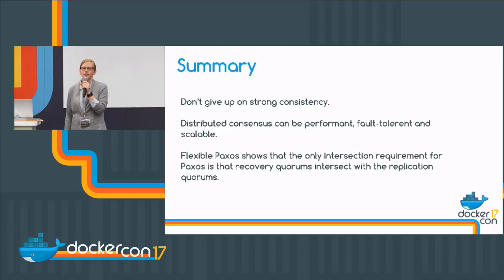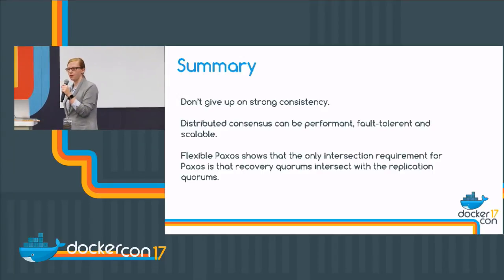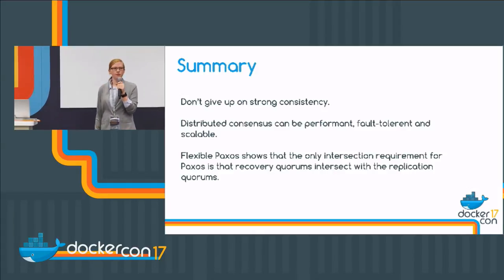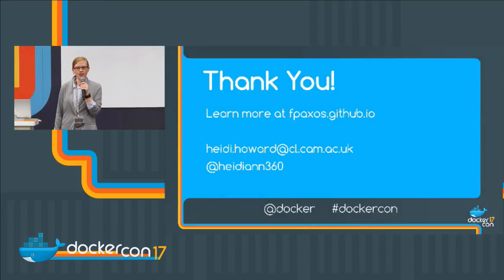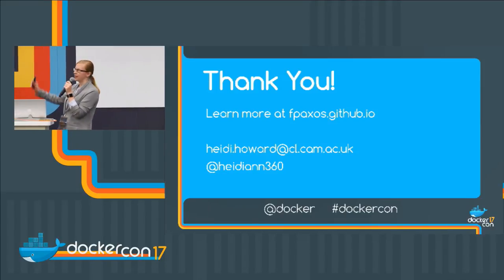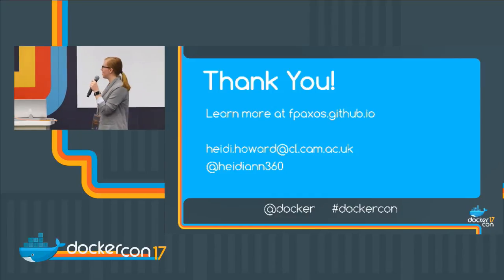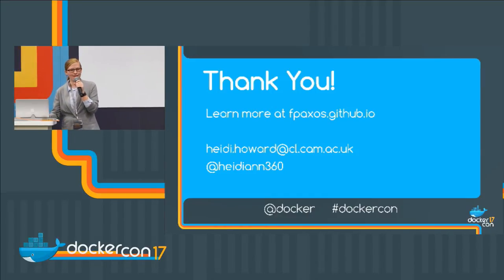So the takeaway message is: the only intersection requirement for Paxos is between the replication quorum and the recovery quorum. Despite what decades of research and teaching have told us, we do not require that all quorums intersect. Thank you very much. If you'd like links for the paper and various blog posts, have a look at fpaxos.github.io, or you can get in touch with me by email or on Twitter.